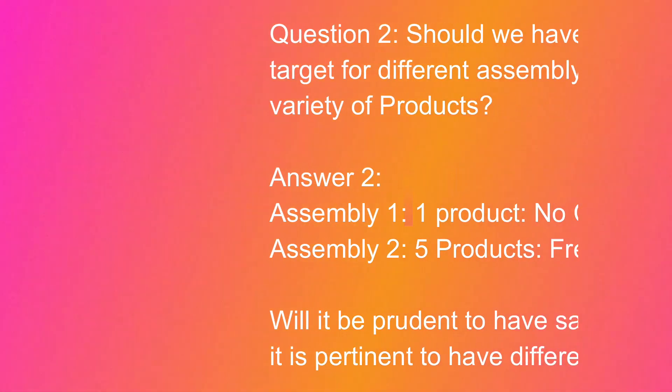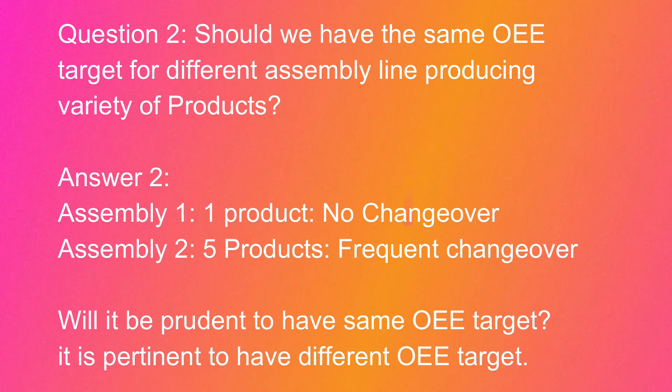The second question: should the OEE target be the same for all assembly lines? For example, if we have 10 different assembly lines, should they share the same target? Consider two lines — one producing only one product all eight hours, and another assembling five different products. The changeover time in line two will be much higher, resulting in lower availability. Therefore, it is pertinent to have different OEE targets for dissimilar processes within the same organization.